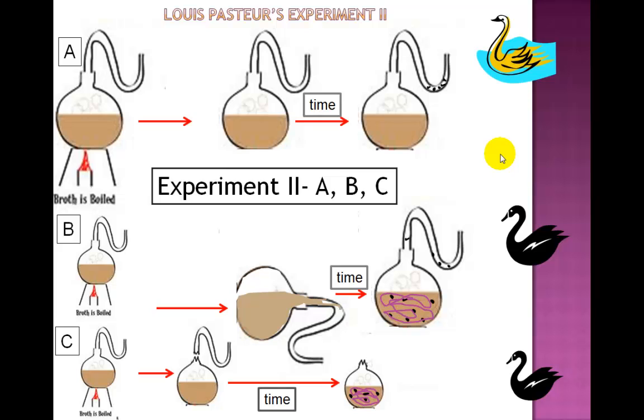He heat sterilized three flasks which we can call as flasks A, B and C. He left flask A standing still for a long period of time. He tilted flask B so that broth would enter the neck of the flask. And he snapped off the neck of flask C, as shown here.